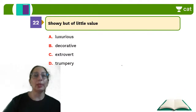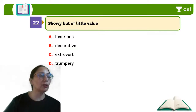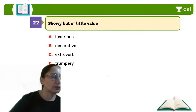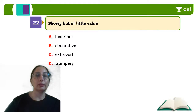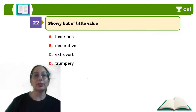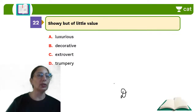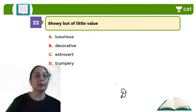Question 22: Showy but of little value — like artificial gold. The answer is D — trumpery. Trumpery refers to something boastful or showy with little value. Decorative is not necessarily of little value. Luxurious is extravagant. Extrovert is a person who is very social.